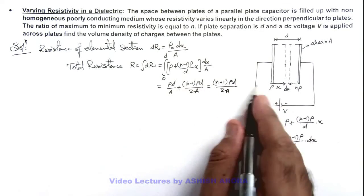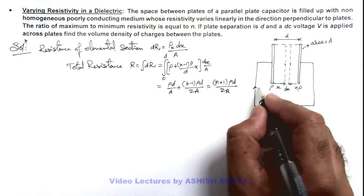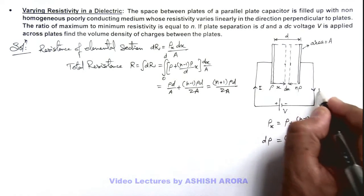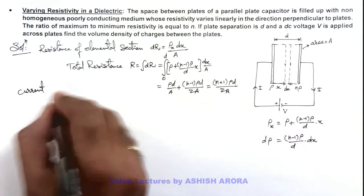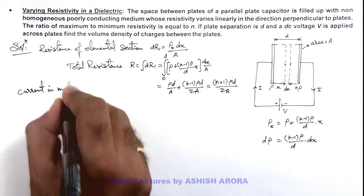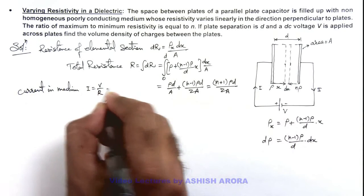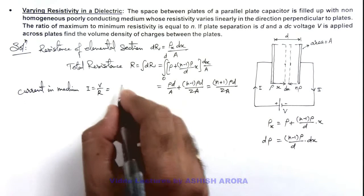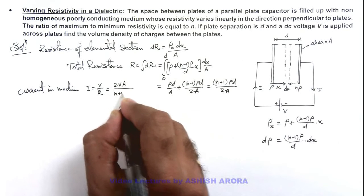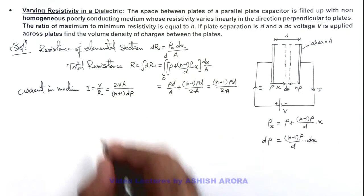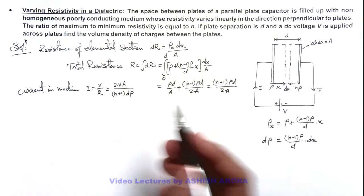So if this is the resistance of this whole section between the two plates, then the current flowing due to this battery can be calculated as current in medium i, we can write as V/R. So this value will be if we substitute the value, this is 2VA divided by (n+1)dρ₀.